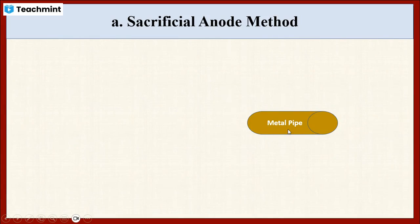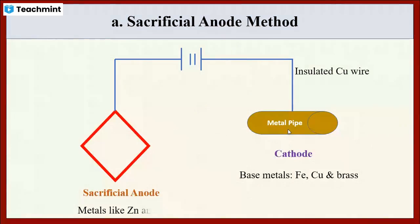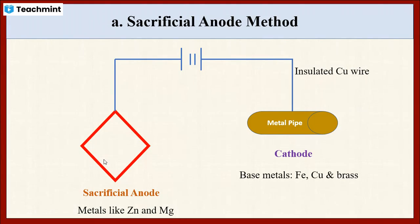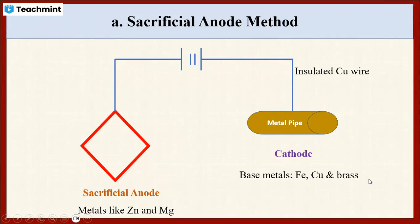For example, consider iron metals. To protect these metals from corrosion, we have to connect them with more active metals like zinc or magnesium. We connect this iron metal with zinc or magnesium metals using sealed copper wire. Zinc or magnesium metals are more active compared to iron, copper, or brass metals. More active metals have less electrode potential and hence act as anodic in nature.